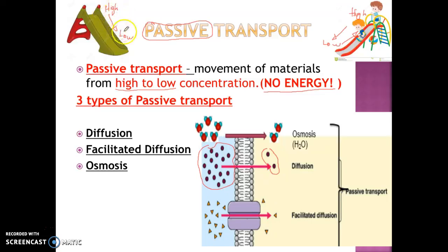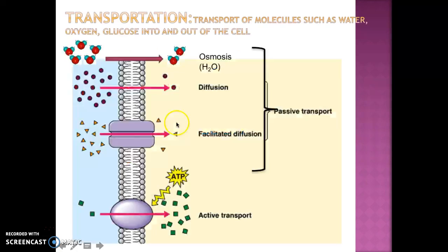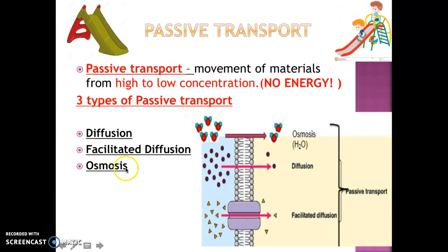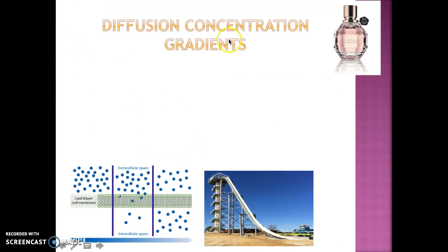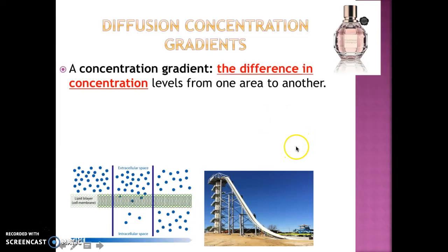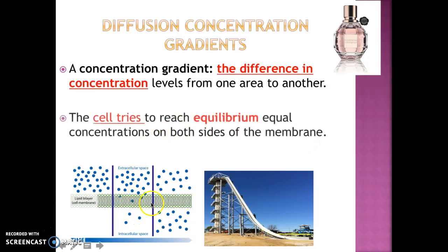Passive transport involves going from high concentration to low concentration. There are three examples: diffusion, facilitated diffusion, and osmosis. A concentration gradient is the difference in concentration levels from one area to another. For example, if you had many molecules on one side of a semipermeable cell membrane, they're going to be going with the concentration gradient — from an area of high concentration to an area of low concentration.